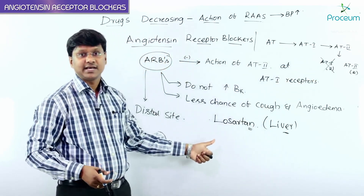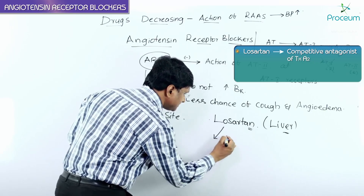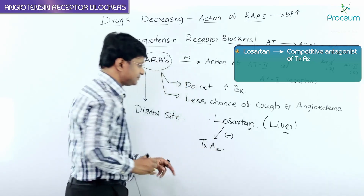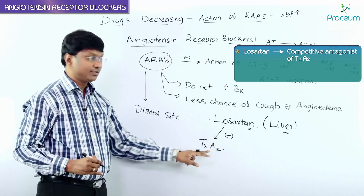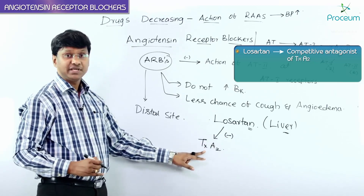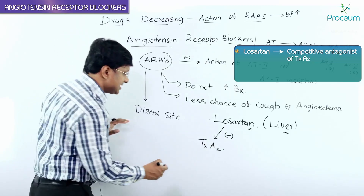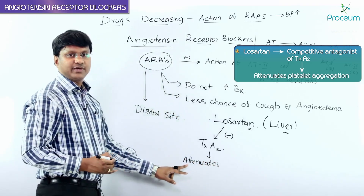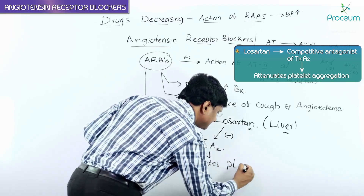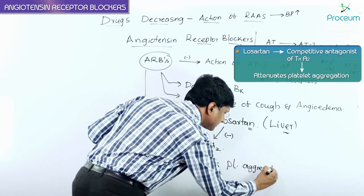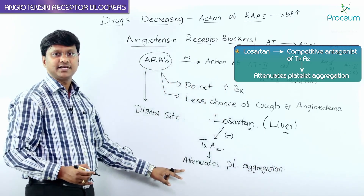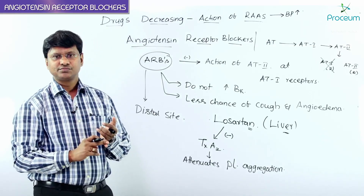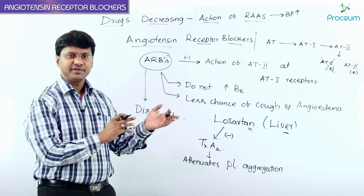Losartan will not only inhibit Angiotensin 2 at the Angiotensin 1 receptor — it is also a competitive antagonist of Thromboxane A2. Because it antagonizes Thromboxane A2, Losartan attenuates platelet aggregation. This is an important point to remember.